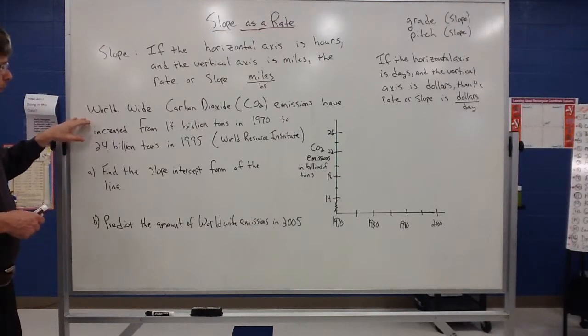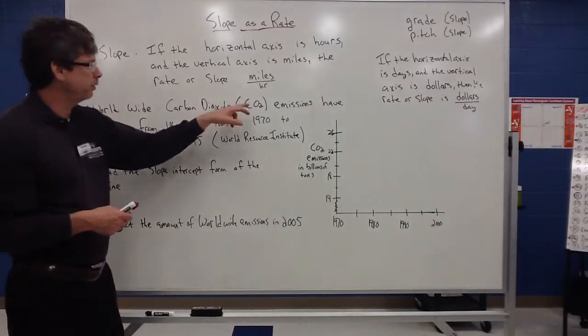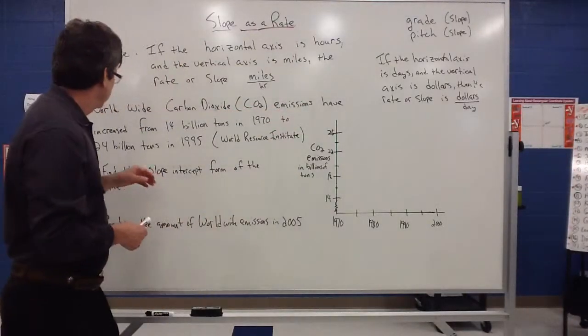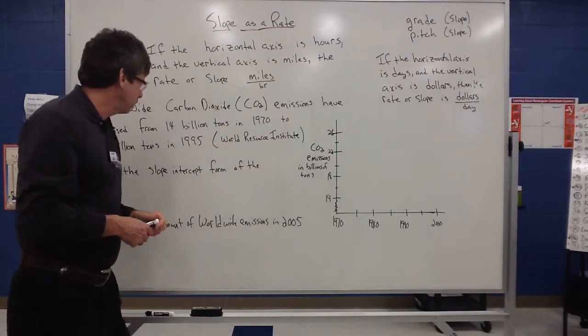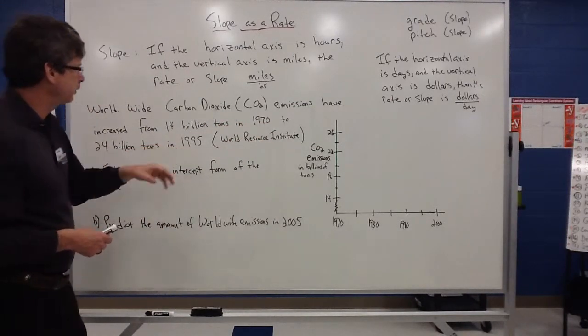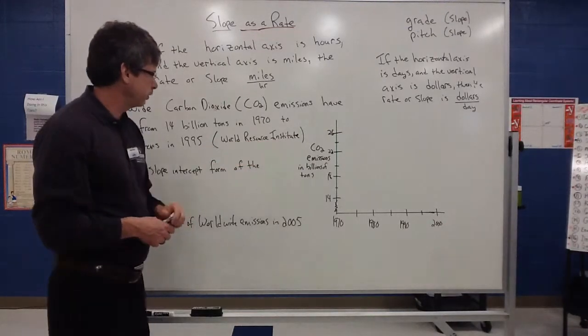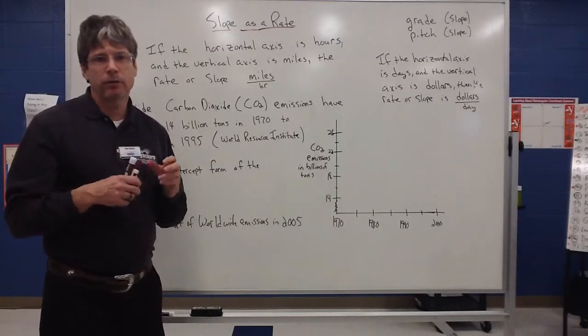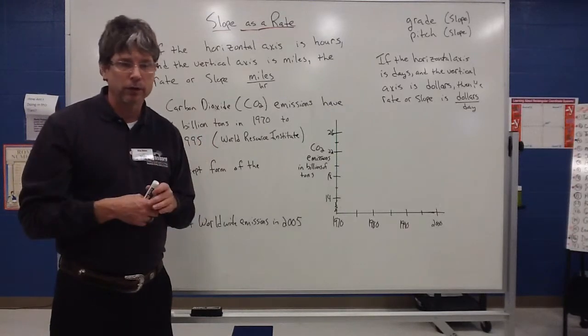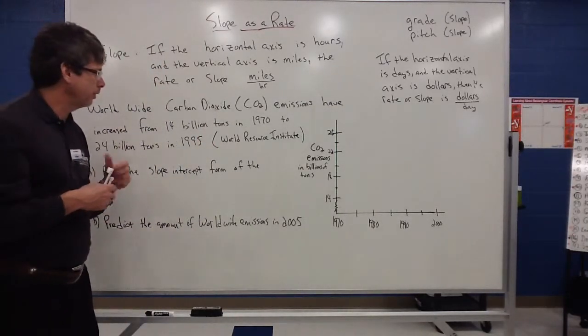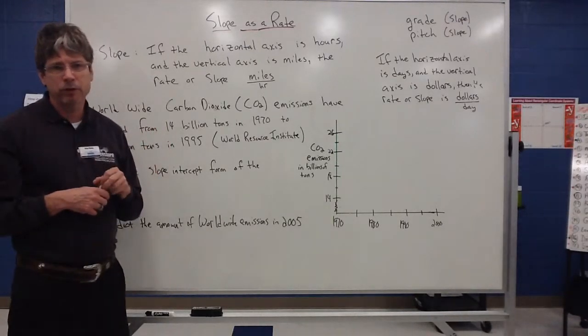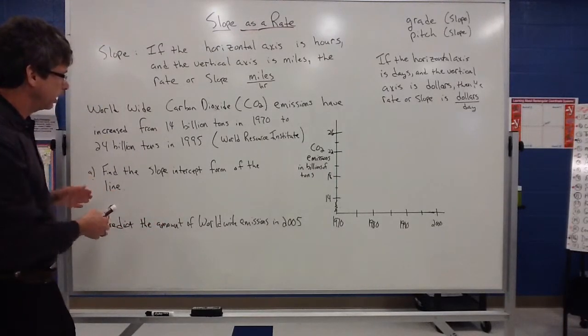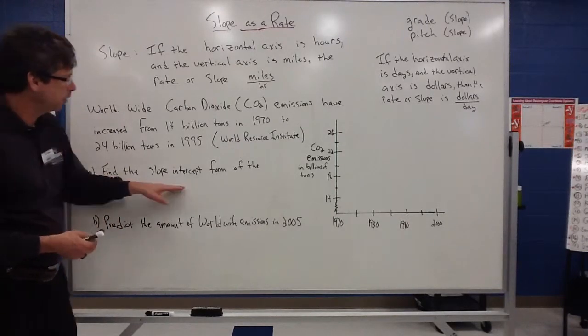Our example that was given to us is something about carbon dioxide or what we call CO2. So worldwide carbon dioxide, in other words CO2 emissions, they have increased from 14 billion tons in 1970 to 24 billion tons in 1995. This is from the World Resource Institute. Again, these days carbon is a big concept. We're trying to reduce what we call our carbon footprint. Trying to drive less, trying to use less fossil fuels. So this is kind of an important concept and it is tracked. People are trying to record this information accurately. Now, for our purposes at this point, we're just going to start out at a little smaller level. We're going to try to find the slope intercept form of the line.